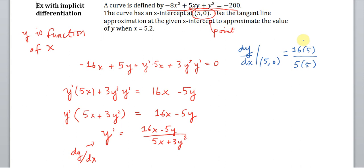So the problem simplifies quite nicely. We get just 16 over 5 or 3.2. I'm actually going to leave it at 16 over 5.